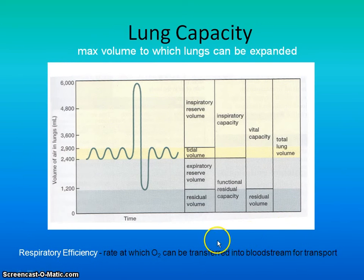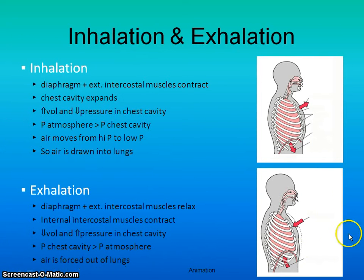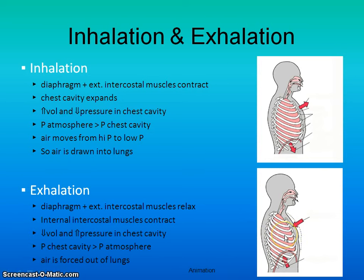The opposite happens when you're exhaling. Your chest cavity pushes inward because your diaphragm relaxes and goes back dome-shaped. Your internal intercostals contract while your external ones take a break, pulling your rib cage down and in. The volume inside your chest cavity decreases and the pressure increases, forcing the air out because the pressure in your chest cavity is higher than what's in the atmosphere.